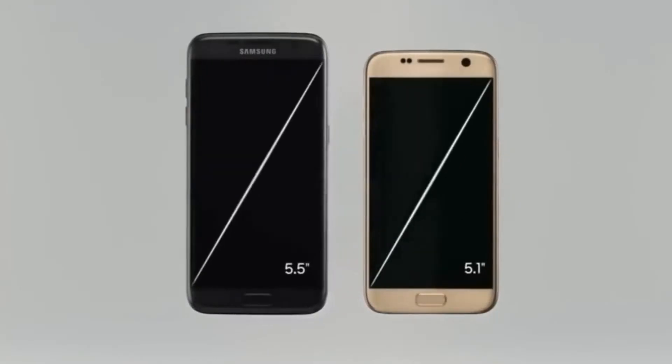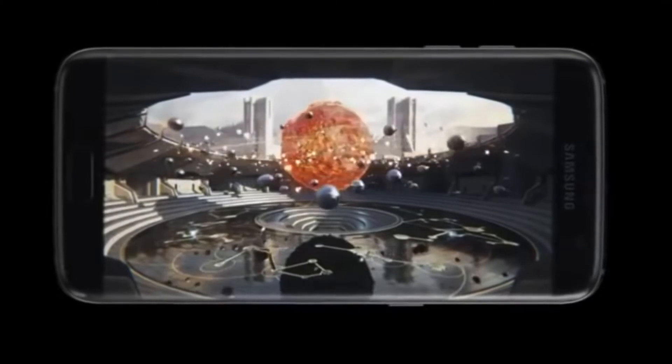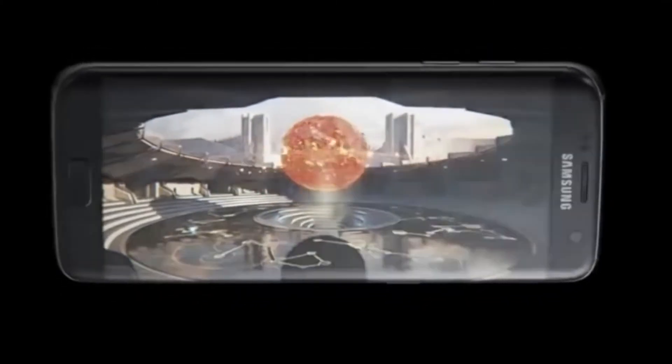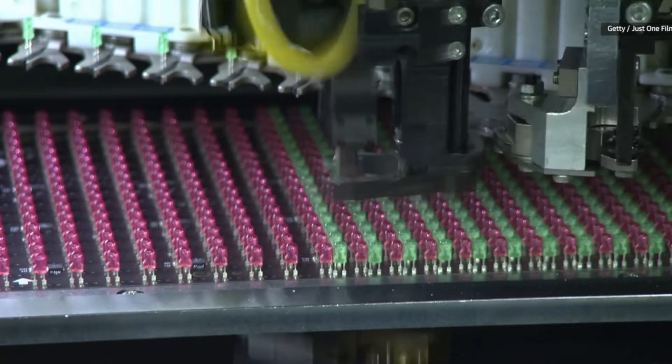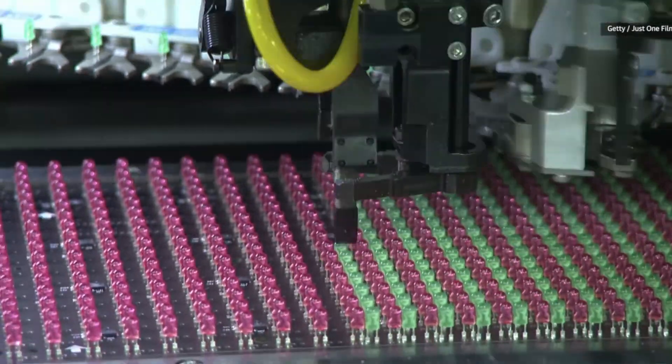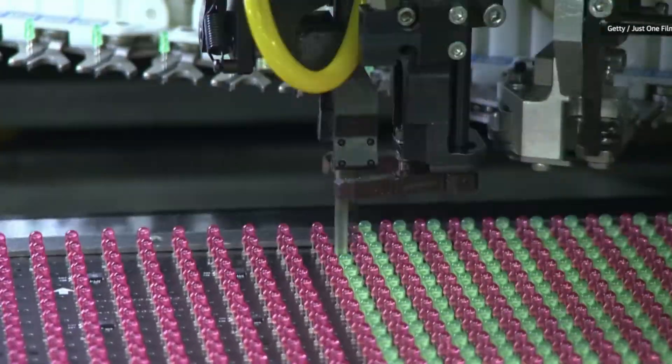One of these was the Samsung Galaxy Round and the other was the LG G Flex. Recently, a lot of phone companies have been moving over to using OLED screens rather than the typical LCD screens, and this is because of the use of polymers in OLED screens.